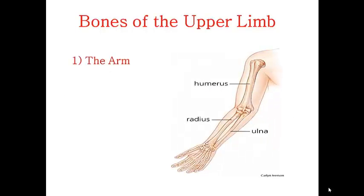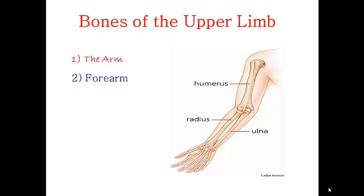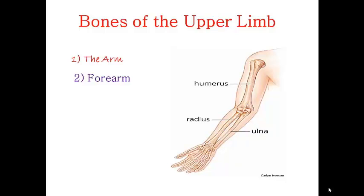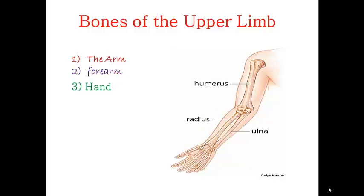Bones of the upper limb. The upper limb is divided into three parts: the arm, forearm, and the hand. There is only one bone forming the arm, known as the humerus. The forearm is formed by two parallel bones: the ulna, which is more medial, closer to the trunk, and the radius, which is the lateral bone, farther away from the trunk. The hand is subdivided into three parts: eight carpals, five metacarpals, and fourteen phalanges — two for each thumb and three for each of the four medial fingers.